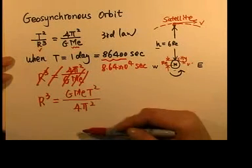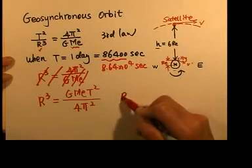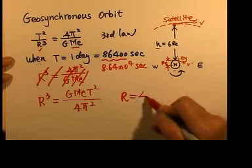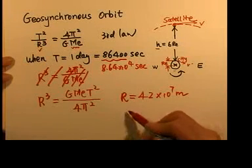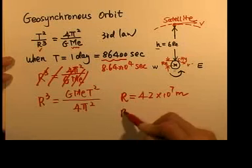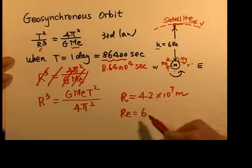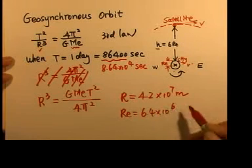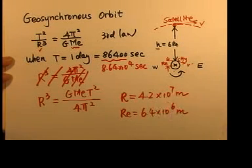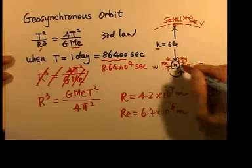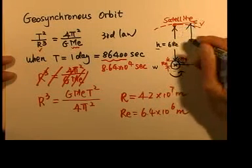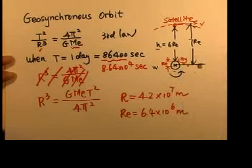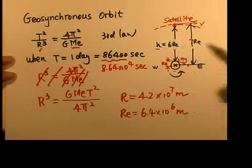Compared to the radius of the Earth, which is 6.4×10⁶ meters, the ratio is close to 7. So if capital R equals about 7 RE — measured from the center of the Earth to the orbit — after subtracting 1 RE, the height above the surface becomes 6 RE. This is how high the satellite must be to be in a geosynchronous orbit.